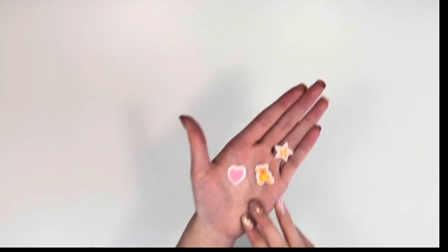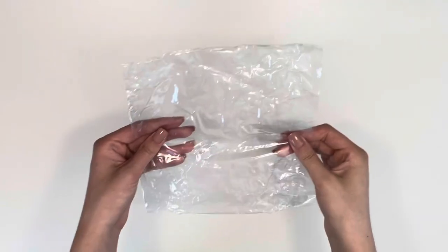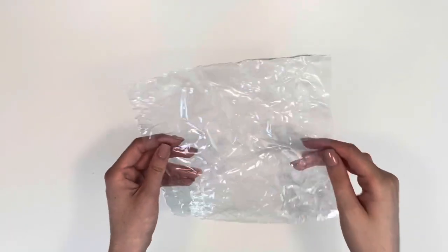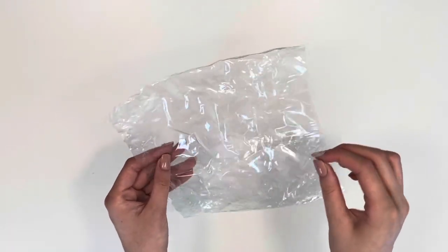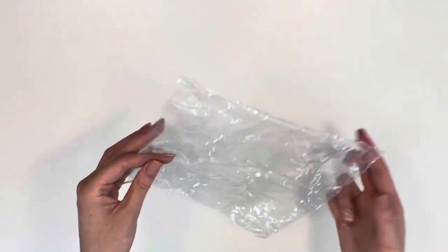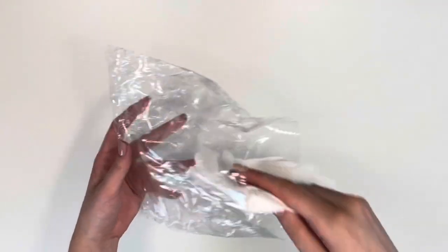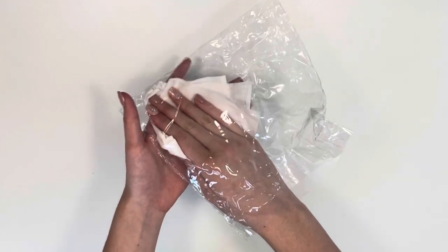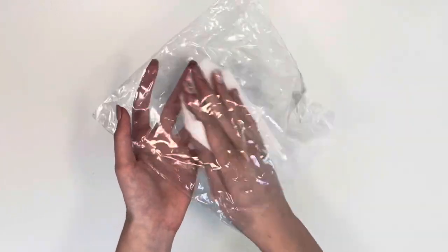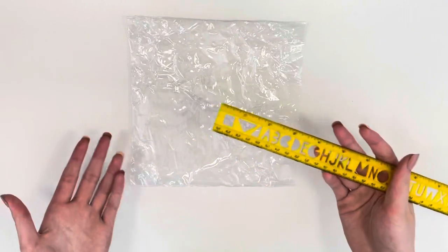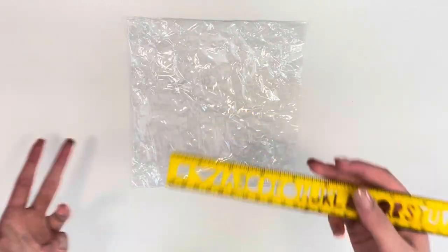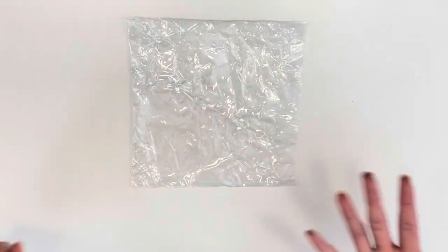Now we have some cute laminated pieces. You can set them aside. Grab some kind of plastic bag. I got this from packaging. It is a little bit thicker than those standard Ziploc plastic bags. Take a damp paper towel and just wipe the inside so that there is no dirt in it.